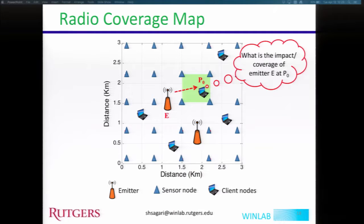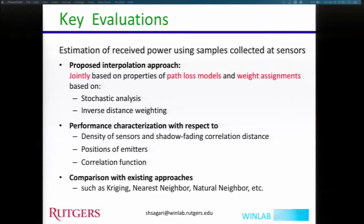We proposed an interpolation approach jointly based on the properties of the path loss model and weight assignments based on stochastic analysis and inverse distance weighting. We characterized performance with respect to sensor density and shadow fading correlation distance, the effect of emitter position, and the correlation function itself. We compared our proposed approach with available mechanisms like kriging, nearest neighbor, natural neighbor, and others.